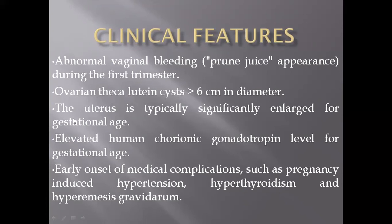Theca lutein cysts are uncommon or rare in partial mole. Because the villi are continuously increasing and are edematous, they cause the uterus to increase significantly in size — larger than expected for gestational age, which is unusual compared to normal or partial mole. Due to trophoblastic hyperplasia, there is increased capacity to produce hCG, so beta-hCG levels are commonly more than 100,000 international units.